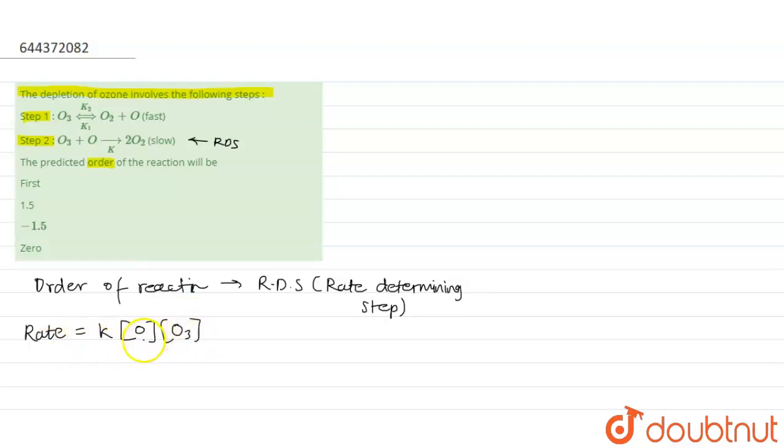So this should be the rate of the reaction. From this we can get the order. Now here, O is formed in first reaction and O is getting consumed in the second reaction. So that's why the concentration of O we have to get from equilibrium approximation.